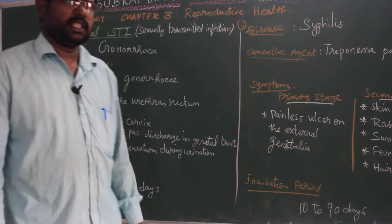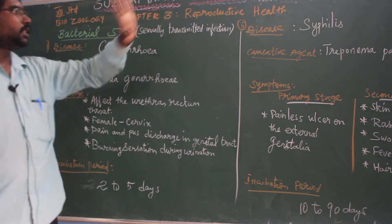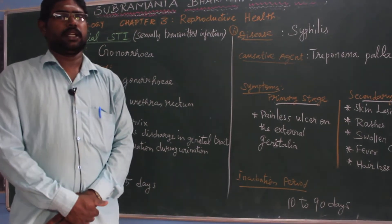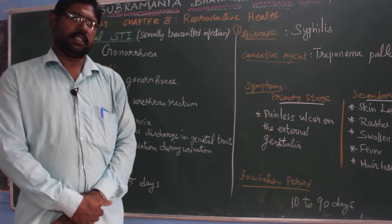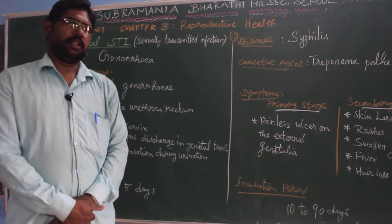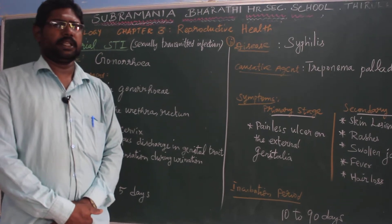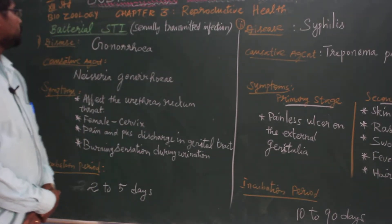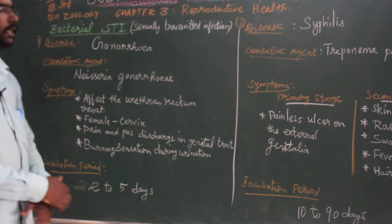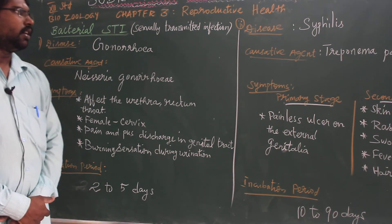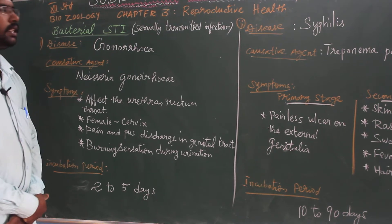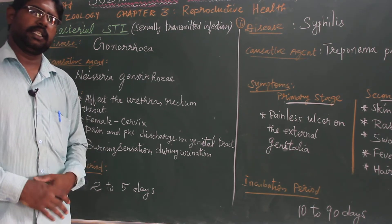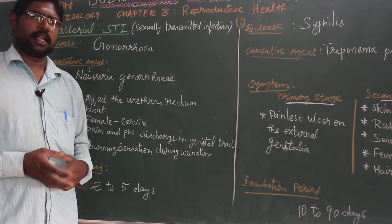Hi students, biozoology 12th standard chapter 3 reproductive health. In the last video we saw about sexually transmitted infections, or venereal disease, or STD — sexually transmitted disease — or reproductive tract infections. These are all common names for STDs. Some of the diseases we discussed about: first we discussed about bacterial sexually transmitted infections. Among these bacterial STIs, some bacteria cause infection on our genital tract. What are the bacteria responsible for this infection?